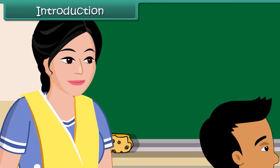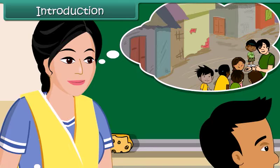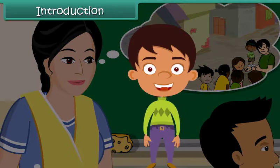Ramesh's mother knows the reason for his absence. They live in a slum area, and Ramesh falls ill frequently because of his unhealthy surroundings. However, Ramesh's mother cannot understand how she can improve their surroundings. Let us understand how we can keep our surroundings and ourselves clean.